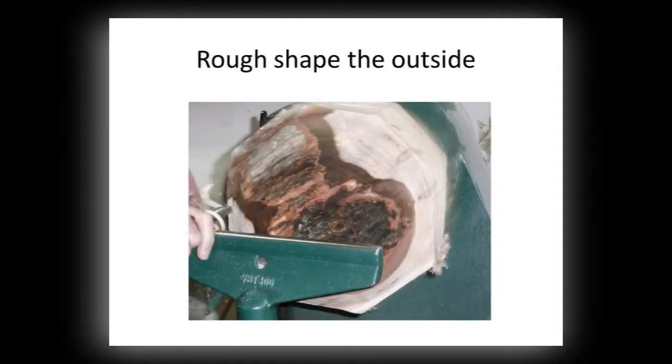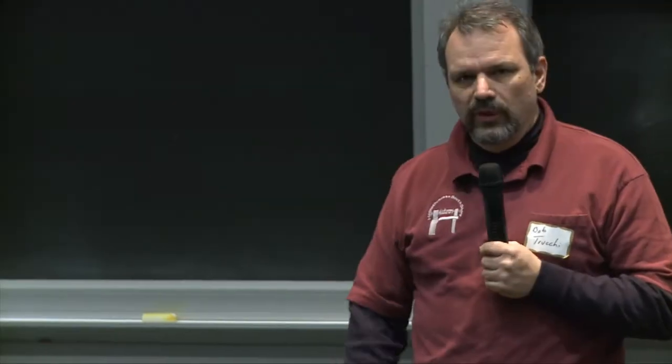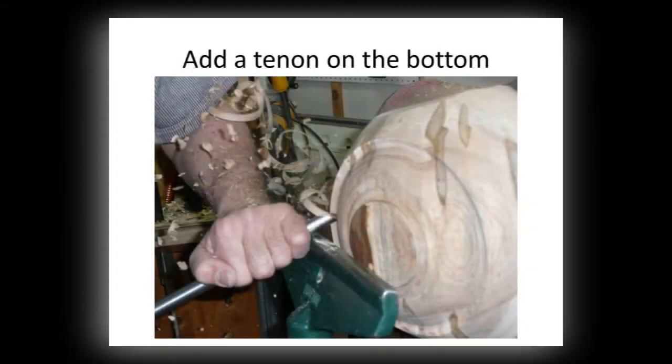So the next thing you do is try to shape the bottom of the bowl. Just try to get a rough shape of what it's going to look like. Get rid of bark and stuff like that, checks and everything else that might be in it. And once you're done with that, you actually have to put a tenon on the bottom of the bowl.